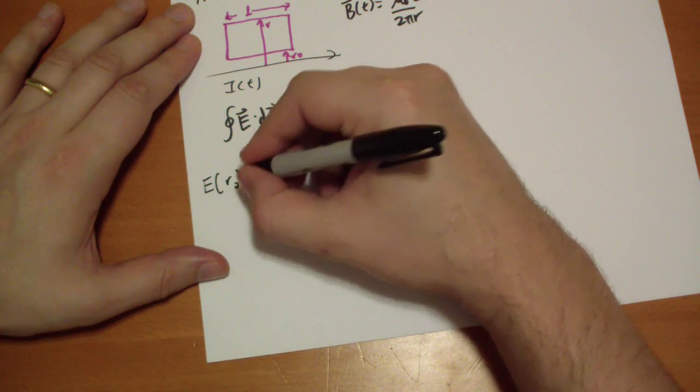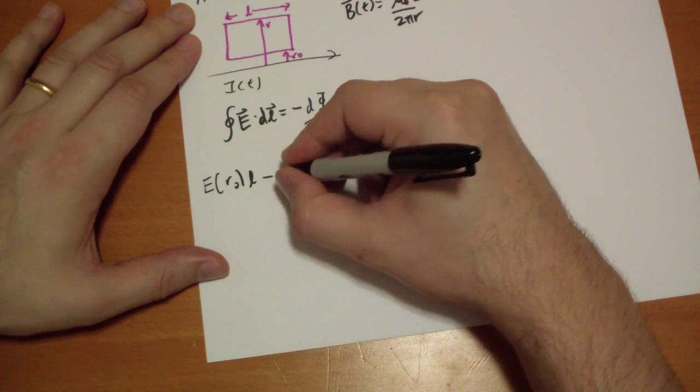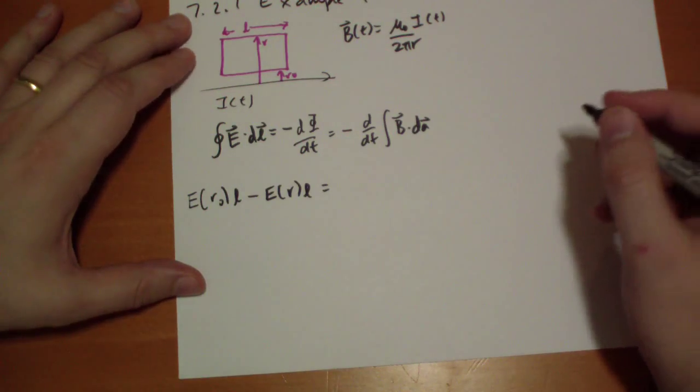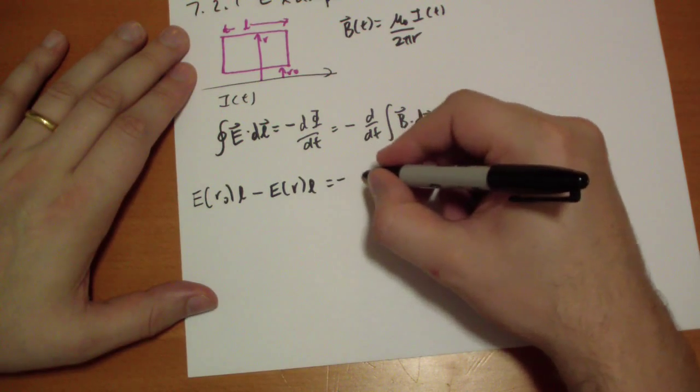So we only have to worry about the E vector at r naught times l, and we subtract the E vector at r times l because you're going backwards.